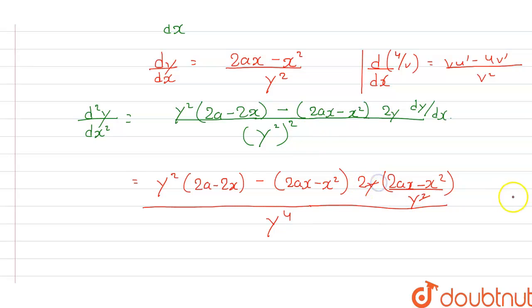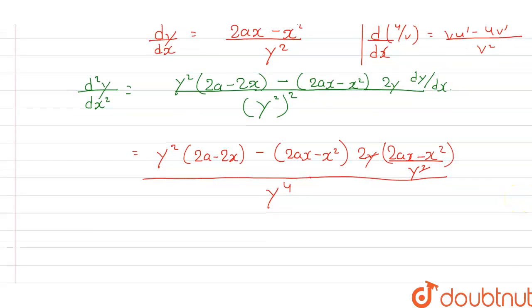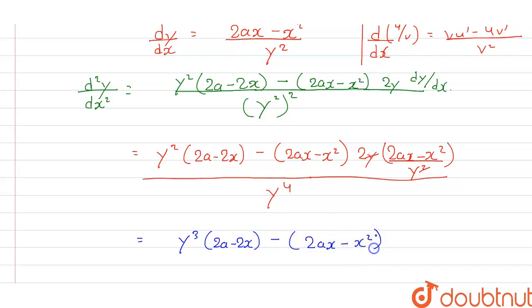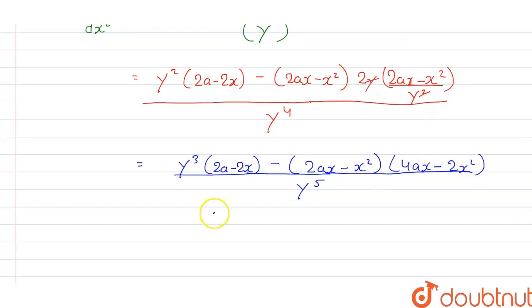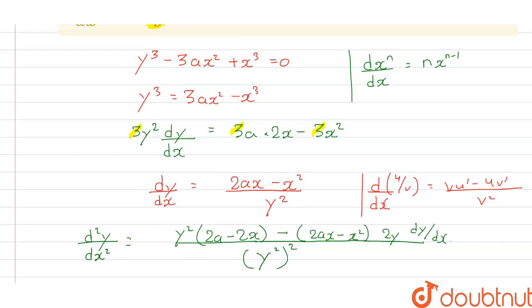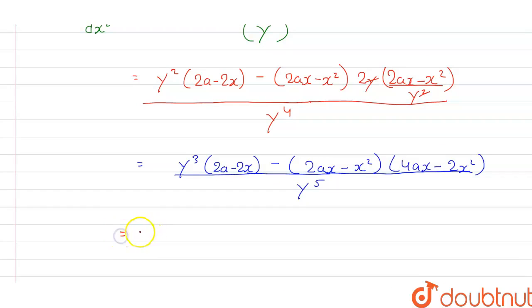One term cancels. Now we take the LCM in the numerator, which means taking LCM of y. So in the numerator we have y³ times 2(a minus 2x) minus (2ax minus x²) multiplied by 2, giving 4ax minus 2x², and in the denominator we get y to the power 5. We also have the value of y³, which equals 3ax² minus x³, so we substitute that in.